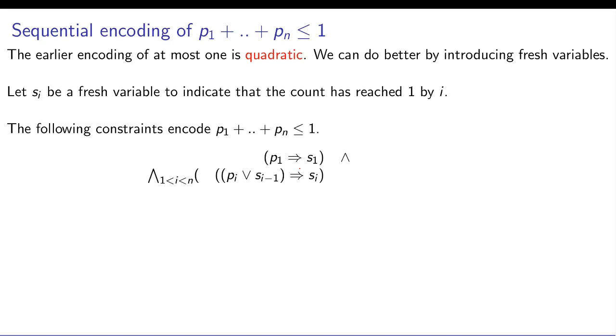So how do we encode? First we encode that if p1 is 1 then s1 has to be 1. So if p1 is 1 then you have at least one bit which is 1 before the p1 bit. We add these constraints. You also add constraints that if you have either seen one in the past or just now you have seen one, therefore you have seen one pi by s of i minus 1. So that's the implementation of definition of si.